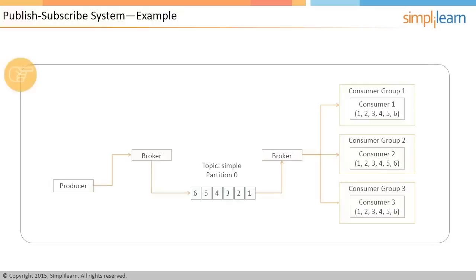The image illustrates the implementation of a publish-subscribe system. Consumer one, consumer two, and consumer three belong to three separate consumer groups. All six messages are sent to all three consumer groups. Since there is only one consumer in consumer group one, it receives all six messages in the order 1, 2, 3, 4, 5, and 6. Similarly, consumer two and consumer three also receive all six messages in the same order.